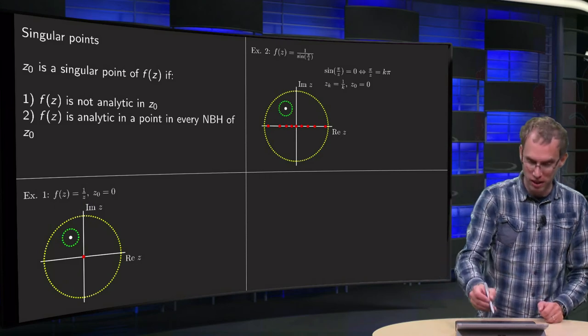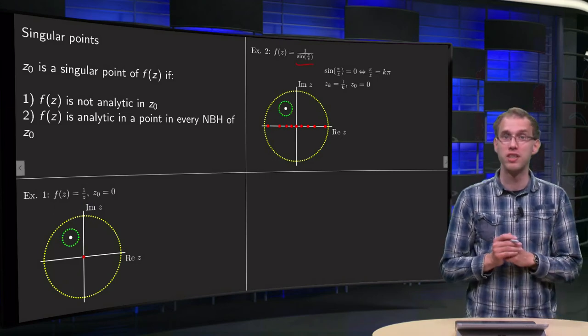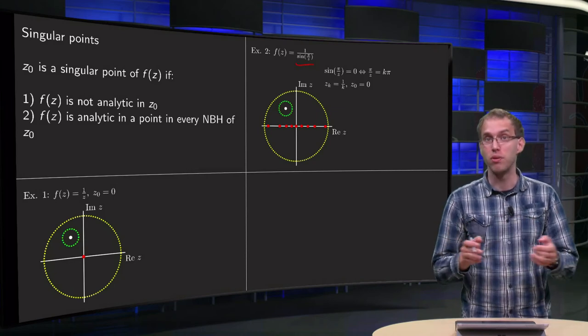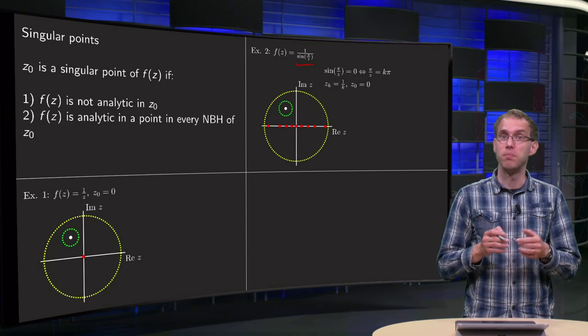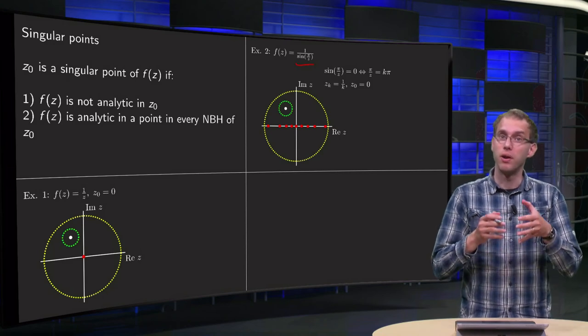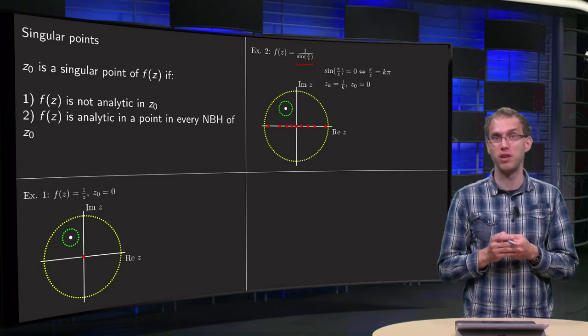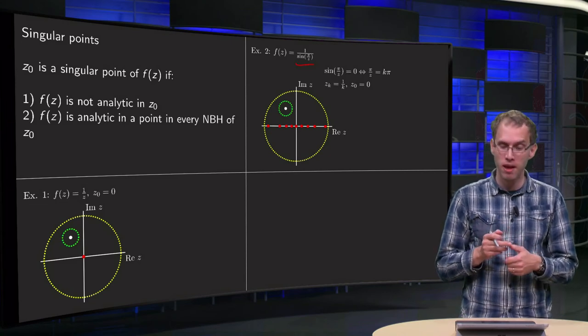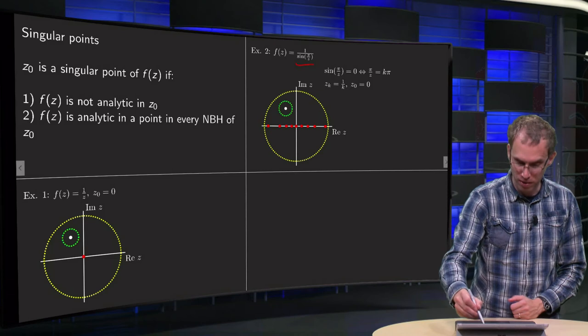What happens if you take this function 1 over sine of pi over z? That looks a bit awkward. Well, a sine is of course analytic, pi over z is analytic. The only problem is of course if you are dividing somehow by 0. Well, first of all for z equals 0, and you have of course a problem with sine of pi over z equals 0.